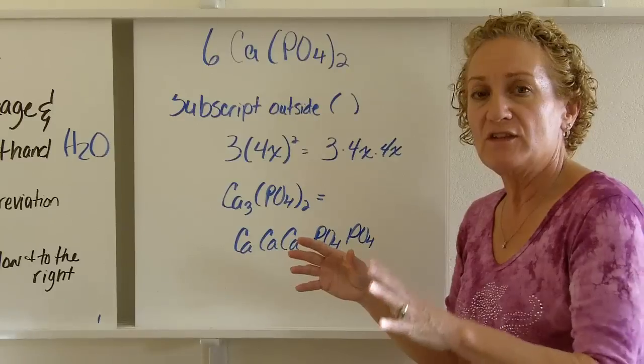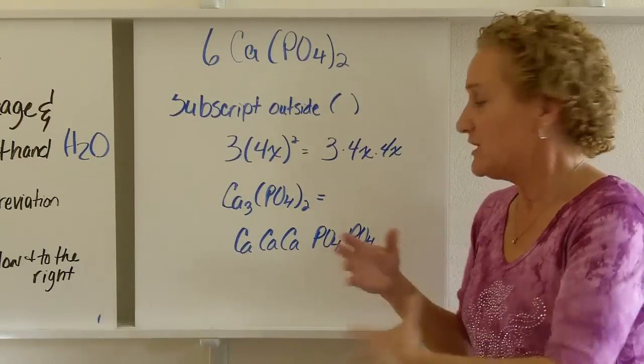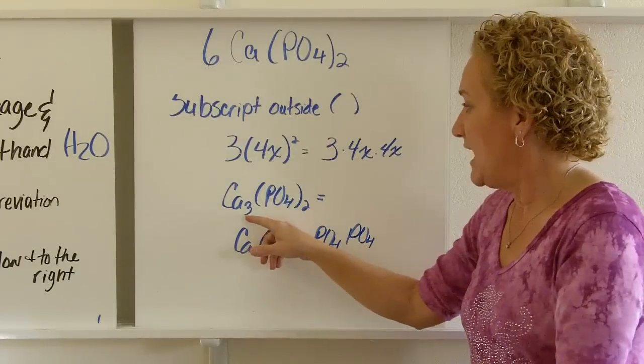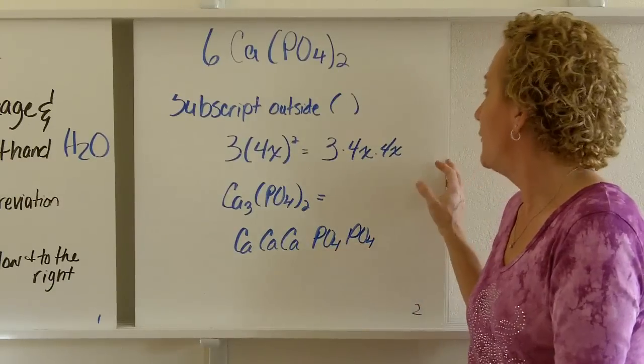And that's really important that you get that down now because it's going to build. Chemistry is cumulative, so it's just going to build on that. So Ca3: 1, 2, 3. PO4, 2: PO4, PO4.